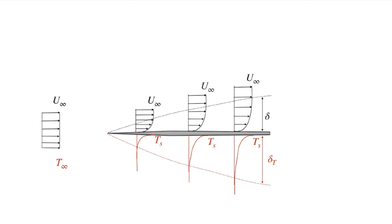When the flow impinges upon the plate we form a boundary layer where the velocity is adjusting from the zero value at the plate through the freestream velocity, through a momentum boundary layer of thickness delta which changes with position.